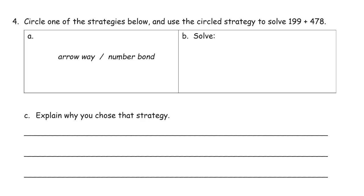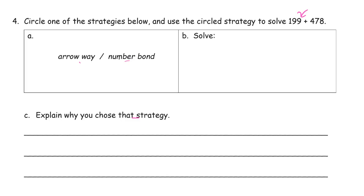Circle one of the strategies below and use the circled strategy to solve 199 plus 478. So we're going to use either arrow way or number bond and then explain why we chose the strategy. So I think I see this 199 and that's almost 200. So if I'm going to add arrow way, I'm going to have to add hundreds, I'm going to have to add tens, I'm going to have to add ones. That's going to be an awful lot to write down the arrow way. So I think if I do a number bond strategy, it's going to be a lot quicker and fewer steps for making mistakes.